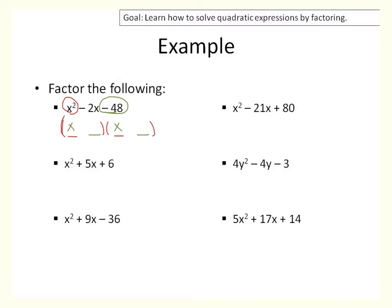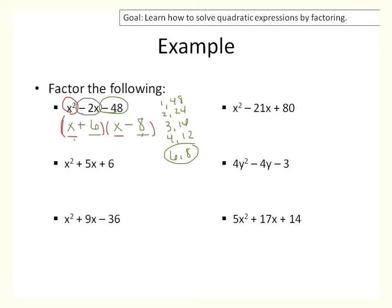We want it to add to be negative 2. So what are our factors of 48? You've got 1 and 48, 2 and 24, 3 and 16, 4 and 12, 6 and 8. We're looking for them to make 2 — 6 and 8 make 2. What's going to matter is where I put my plus sign and minus sign. If I want them to add to negative 2, I want negative 8x plus 6x, because that adds to negative 2. So that is our answer.